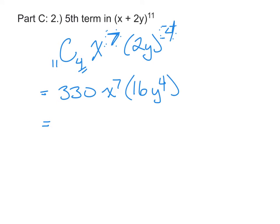Finally, multiply 330 by 16, and it'll give 5,280x to the 7th, y to the 4th.